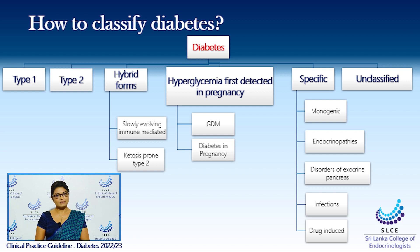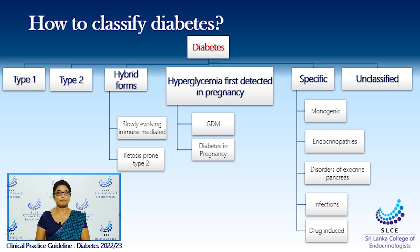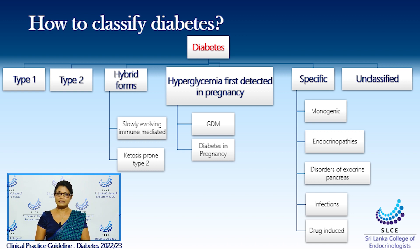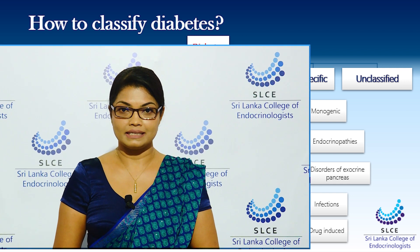There are a few specific types of diabetes. First is the monogenic diabetes, endocrinopathy-associated diabetes, disorders of exocrine pancreas associated diabetes, diabetes associated with infections, and diabetes associated with drugs. There is also an unclassified type of diabetes where patients are placed until their type of diabetes is recognised, and this is a temporary classification.